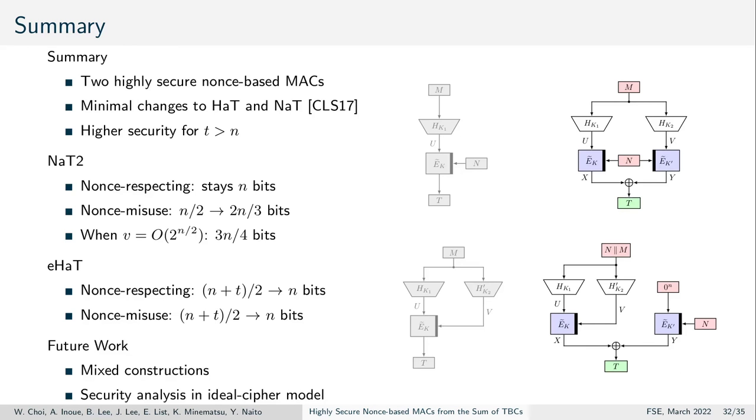In summary, we proposed two highly secure nonce-based MACs. Those took nonce-as-tweak and hash-as-tweak by Cogliati et al. as a baseline and introduced conceptually simple changes. They possess almost full security in the nonce-respecting and beyond-birthday bound security in the nonce-repeating model. Neither nonce-as-tweak nor hash-as-tweak could achieve both properties simultaneously.